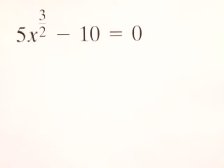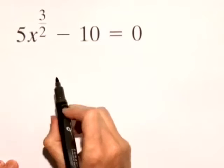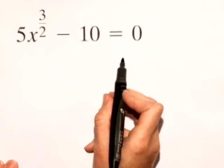For our next problem, we have an equation to solve. We have 5x to the 3 halves power minus 10 is equal to 0.